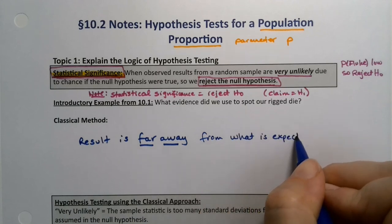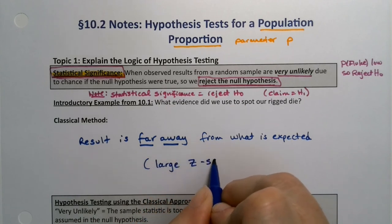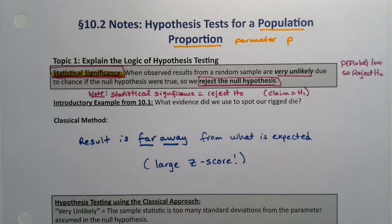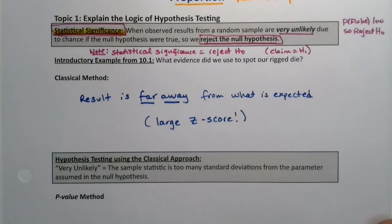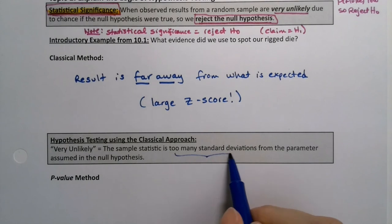In other words, you have a large z-score. That's what I mean by this - too many standard deviations away, large z-score.